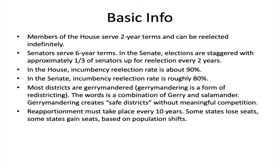Why do we have such high incumbency re-election rates? In the House of Representatives, the vast majority of districts are gerrymandered. Gerrymandering is a form of redistricting. Redistricting must happen at least every 10 years when the new census is concluded, because each district must have roughly the same number of people living in it. As people move between districts, some gain population and some lose population, so districts are redrawn at least every 10 years. In the vast majority of states, they are redrawn by state legislatures and governors — it is basically state law that defines federal congressional districts.